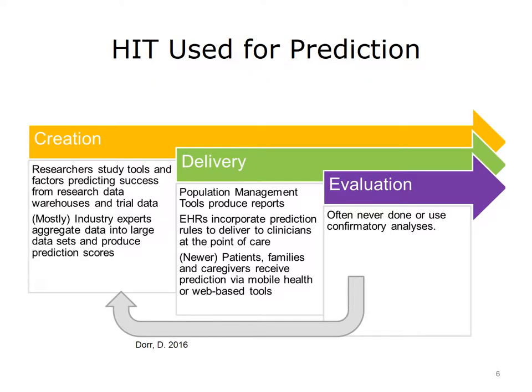HIT is used for prediction in three ways — creation, delivery, and evaluation. Researchers and people in industry often create algorithms that risk-stratify or predict outcomes. Researchers study a condition or group of patients, analyze their data, and propose a risk score. Industry also analyzes data, but they use it for the benefit of program planning. The word industry, in this situation, is loosely defined as large health plans, health product companies, and data-oriented companies that work with healthcare, such as Siemens or Optum.